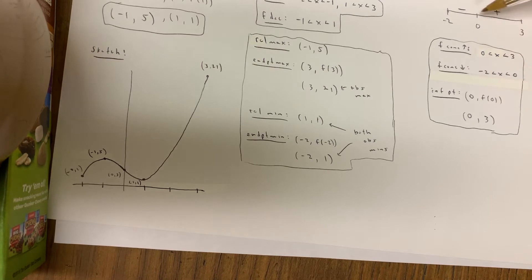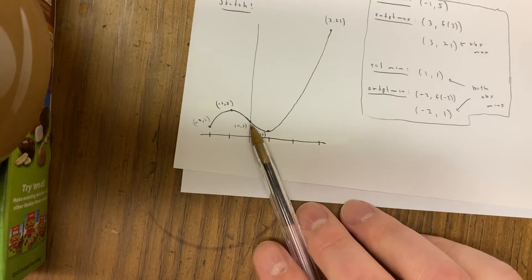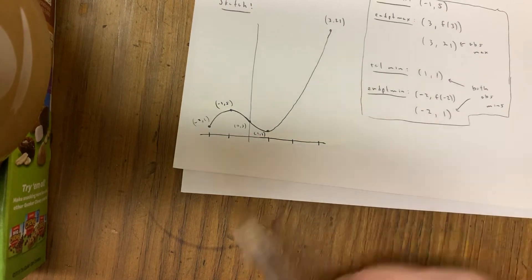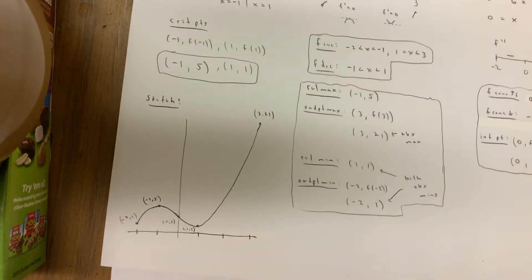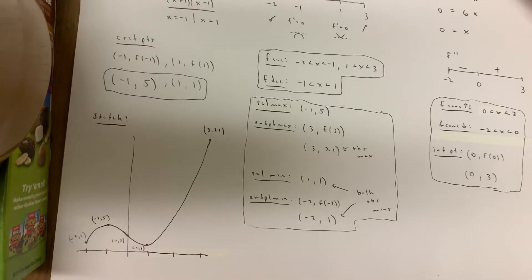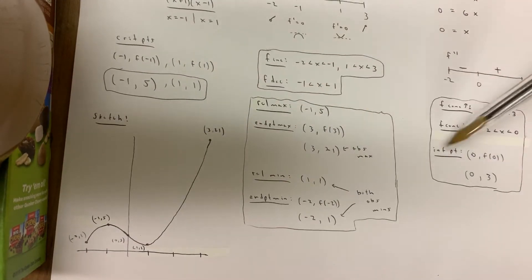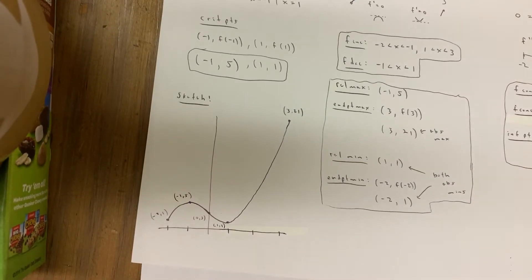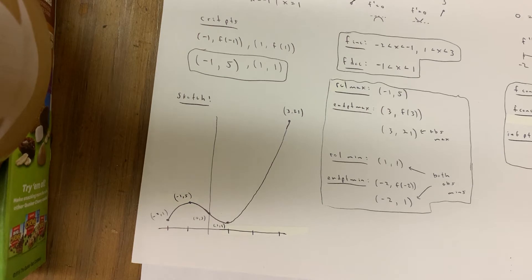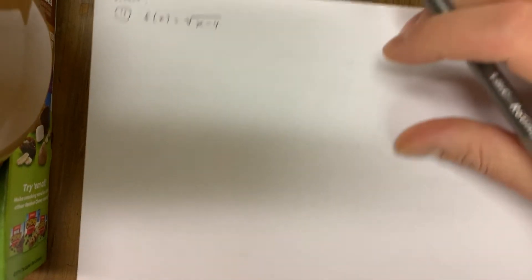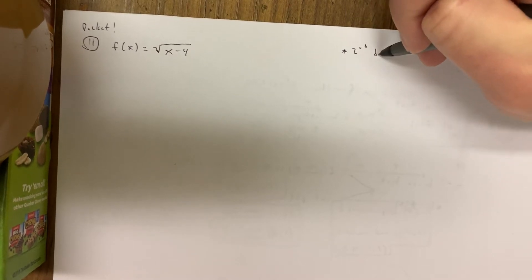Second derivative test — hopefully pretty easy. There's a sign change so we know there's an inflection point at (0, 3), which also happens to be the y-intercept. The sketch afterward should not be too terrible. Try not to worry so much about the sketch — it's not the most important part. They don't really have you sketch all that much on the AP anymore. Today we're continuing with the second derivative test — call it Second Derivative Test Day Two.